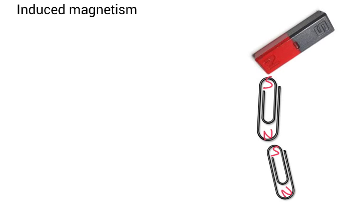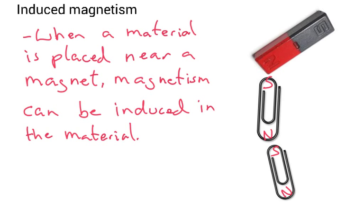And then the paper clips will be attracted towards the magnet. When a material is placed near a magnet, magnetism can be induced in the material, and as soon as you take the material away from the magnet, that magnetism, that magnetic effect, is stopped. It goes.